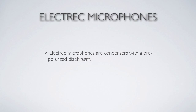There's another subcategory of condenser called the electret microphone. One of the needs of the condenser is to be polarized — we connect a DC battery-type supply across the capsule. Electret microphones have what we call a pre-polarized diaphragm, which means they don't need that polarization voltage. But they still need power to run the electronics inside the microphone. So it's not that different from a condenser in real terms.